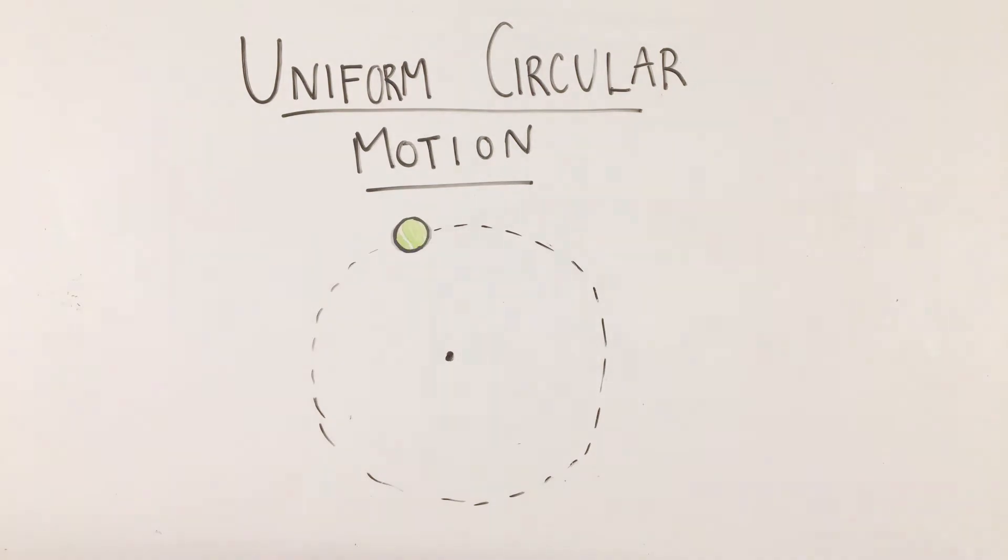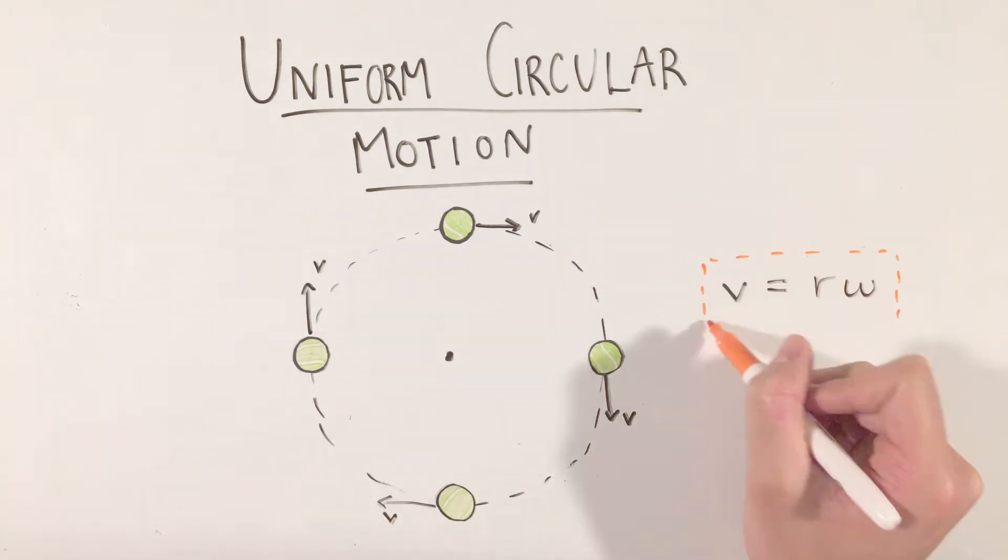When it comes to circular motion, the velocity of an object is always directed along the tangent line to the circle at any given point. This tangential velocity can also be defined as a product of the radius and a quantity known as angular velocity, symbolized by the Greek letter lowercase omega, where angular velocity is simply how fast an object is rotating.